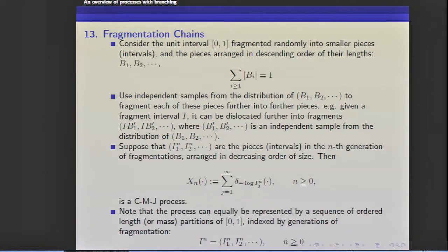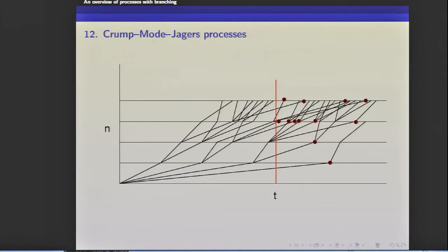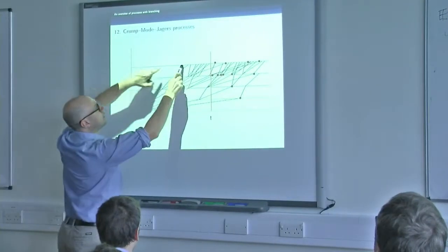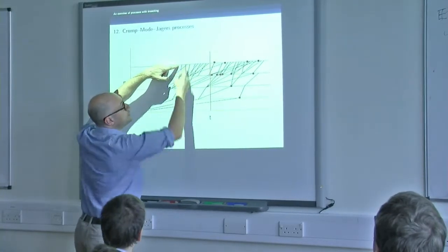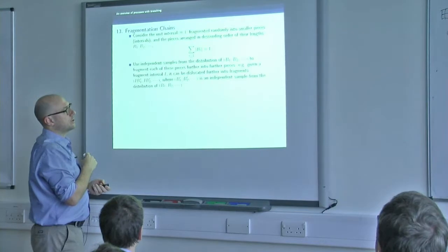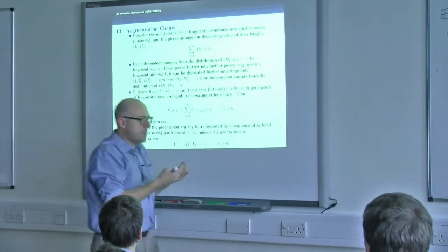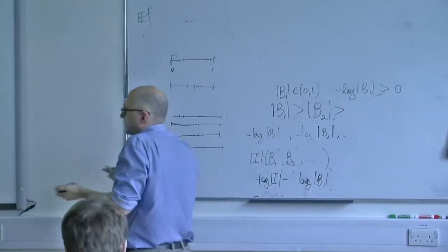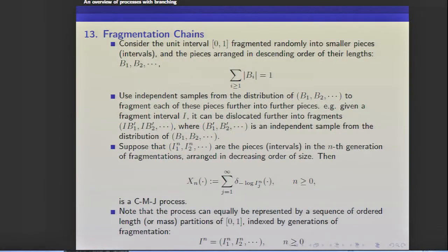Rather than talking about a scattering of positions in the nth generation - those positions in the CMJ happen to be birth times - the scattering of the point process in the nth generation is a scattering on the positive half line amounting to birth times in the CMJ. So instead of talking about a point process of birth times, I can talk about a point process of minus log fragment size lengths, or just a sequence of ordered masses.